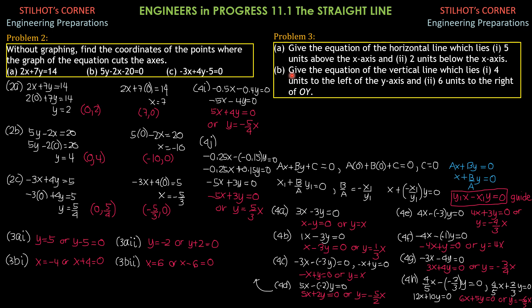We proceed to 3B: Give the equation of the vertical line which lies (i) 4 units to the left of the y-axis and (ii) 6 units to the right of the y-axis. For vertical lines, the guide equation is x = constant, where that constant is positive if it lies to the right of the y-axis and negative if to the left. For B(i), 4 units to the left: x = -4 or x + 4 = 0. For B(ii), 6 units to the right: x = 6 or x - 6 = 0.